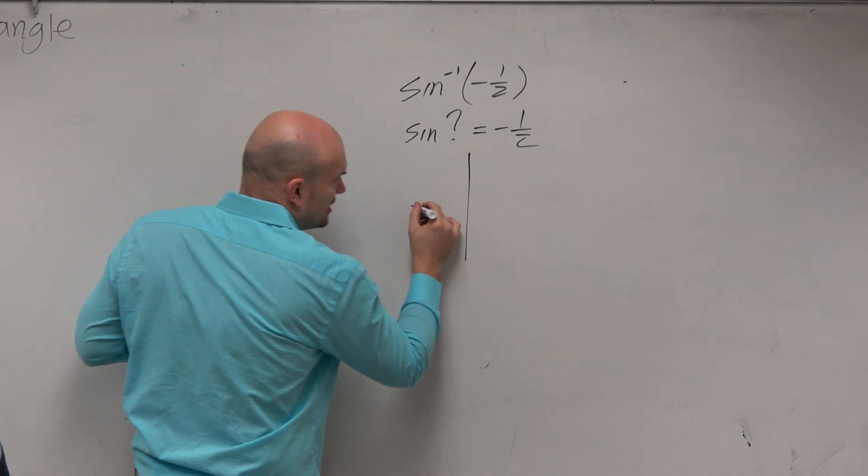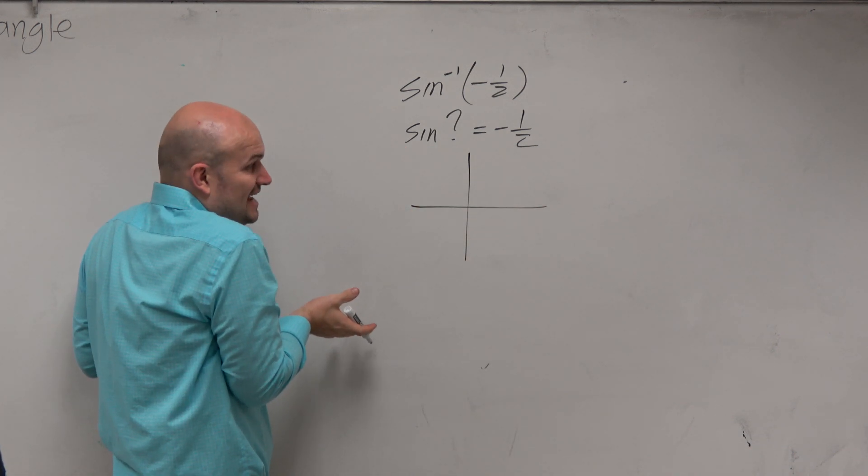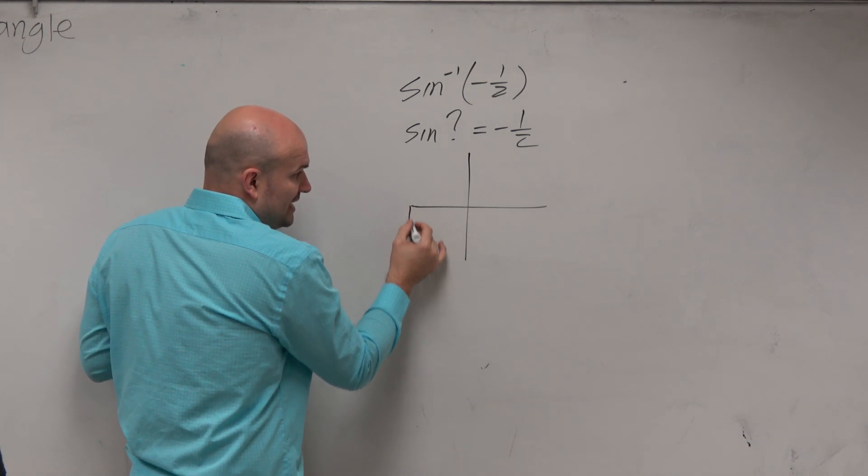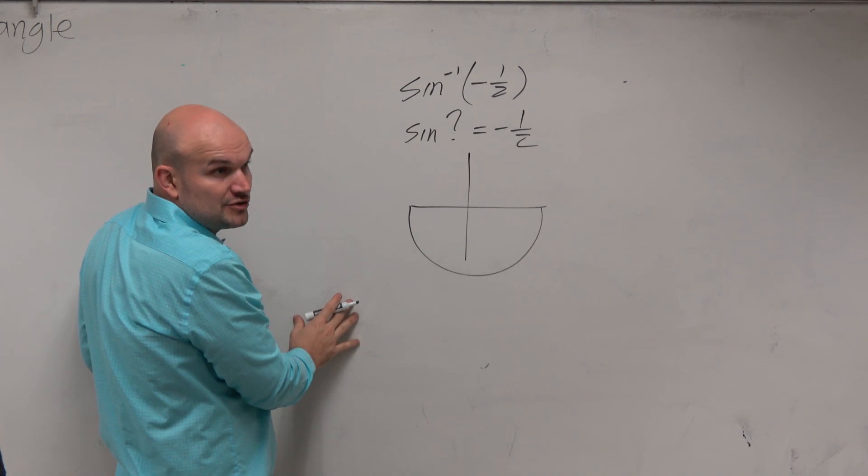So I go back again to my understanding of the unit circle. If sine is negative, it has to be down here on the unit circle. You guys agree with me on that, right?